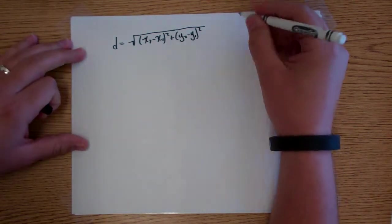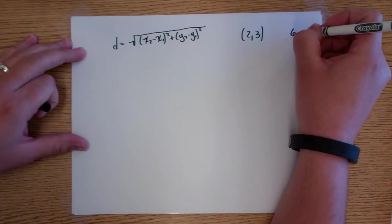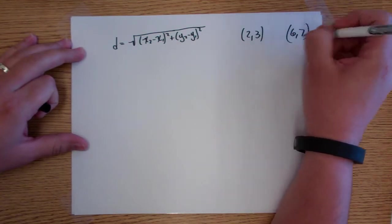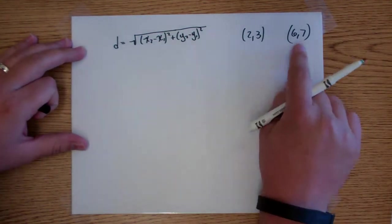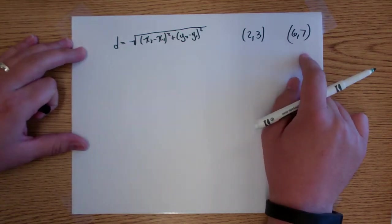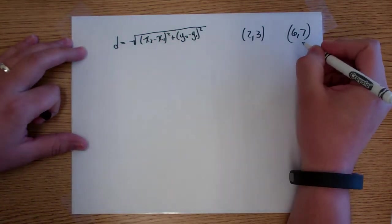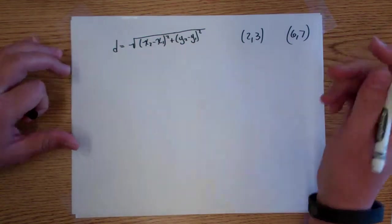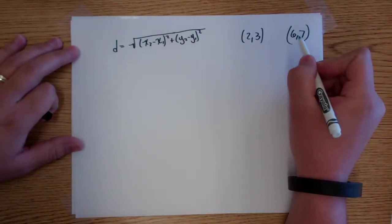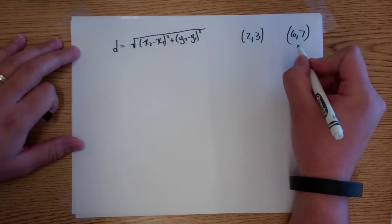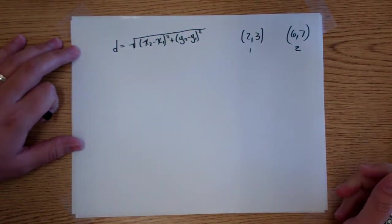So if you're given two points, say (2, 3) and (6, 7), and you want to find the distance between the two, simply pick one to be point 1, pick one to be point 2, and run them through the formula. It doesn't matter which you make which. I would suggest finding the one with the bigger numbers, make that point 2, and the smaller numbers make it point 1 — it just makes the math easier.